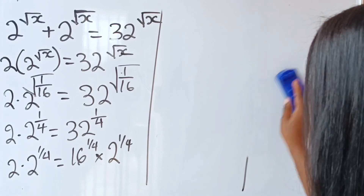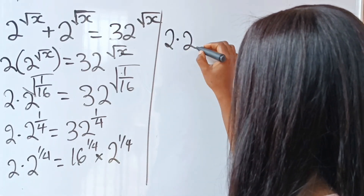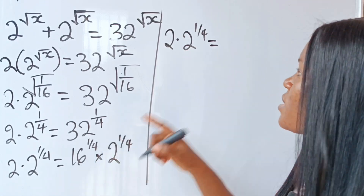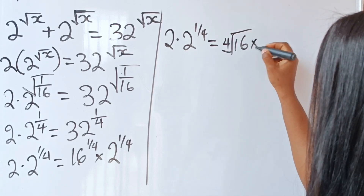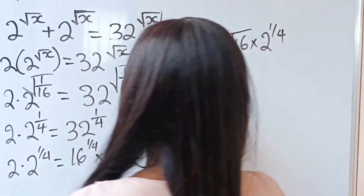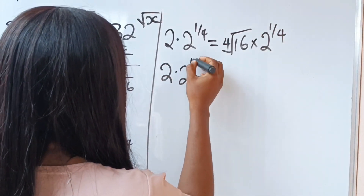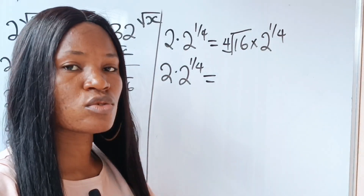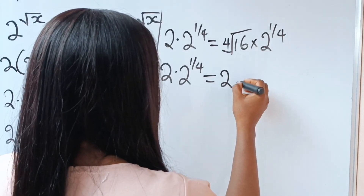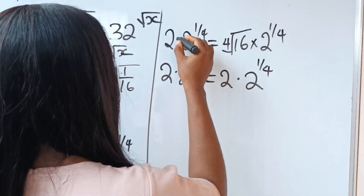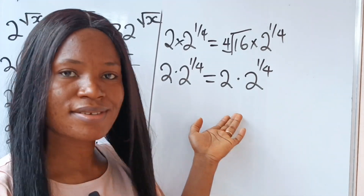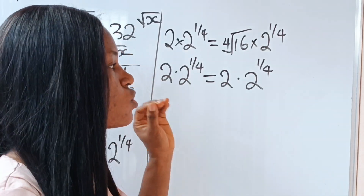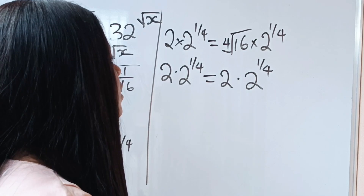Continuing, 16 to the power of 1/4 is the same as the 4th root of 16, which equals 2, since 2 multiplied four times gives 16. So the right hand side becomes 2 multiplied by 2 to the power of 1/4, which matches the left hand side exactly — confirming that x equals 1/16 is correct. Thank you so much for watching; please give us a thumbs up and turn on your notification bell.